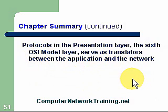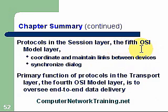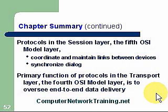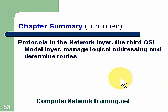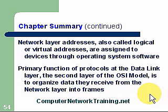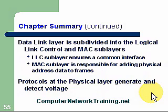The session layer — the fifth layer — establishes sessions between two computers. The primary function of the transport layer is to oversee end-to-end delivery and ensure reliable, accurate data. The network layer, the third layer of the OSI model, manages logical addressing — IP addresses are put into packets and read at this level. Network layer addresses are also called logical or virtual addresses. MAC addresses are added and read during the data link layer, and logical link control is also part of this layer.